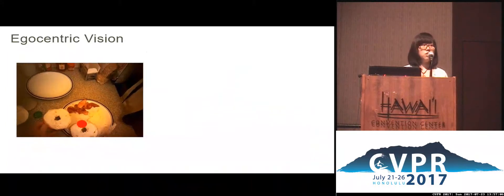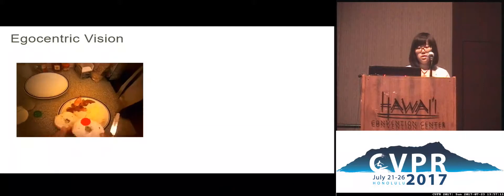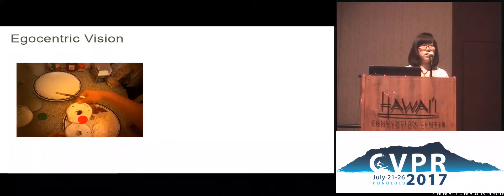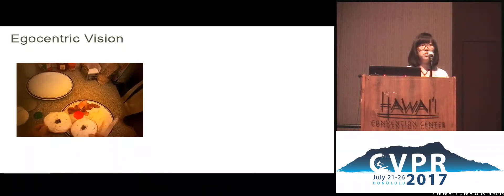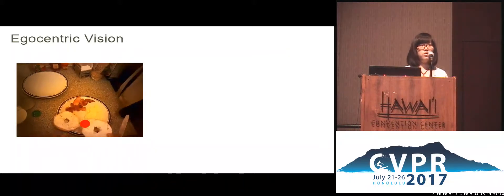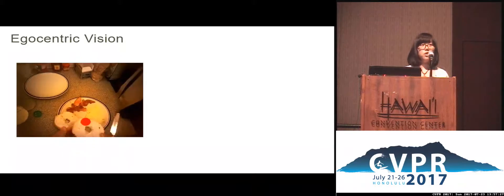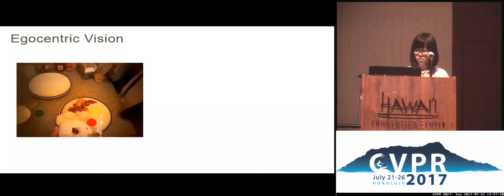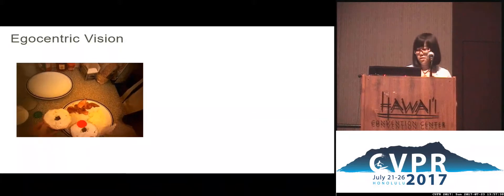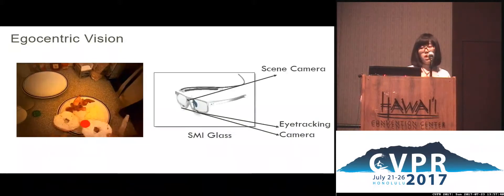Now let's take a dive deeper into egocentric vision by looking at this specific example. Given this video frame, what can we learn from here? We could clearly figure out that this man is preparing for a meal, and we can also figure out the head orientation of the person in the space and what objects have been brought into view. The exciting part of this talk is about the gaze or the eye tracker, which lots of folks here are also excited about.